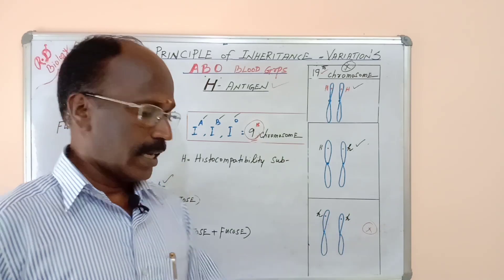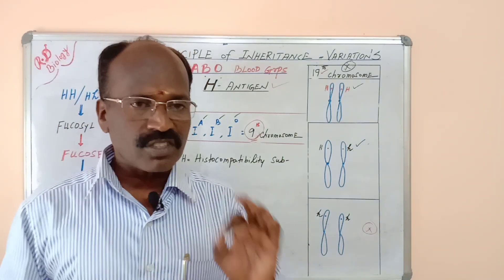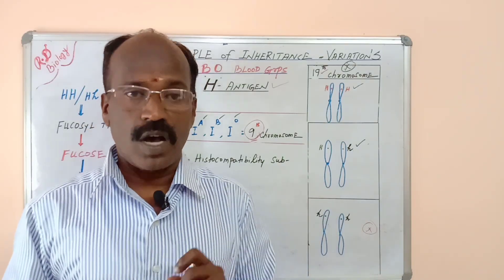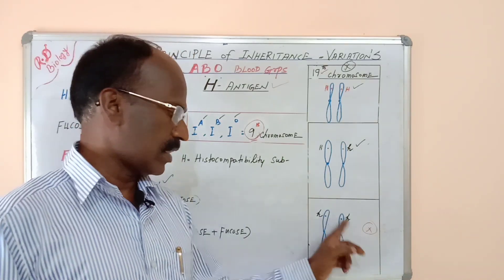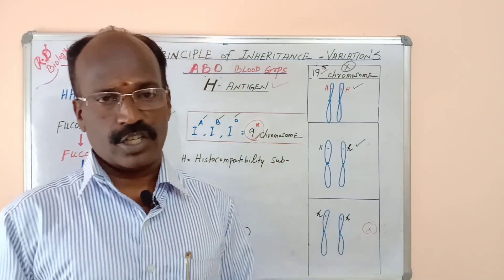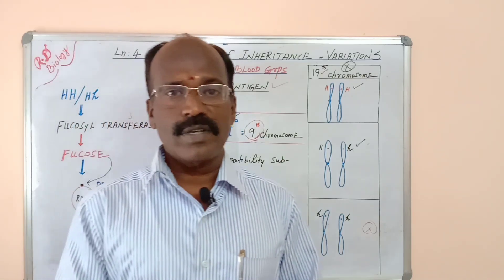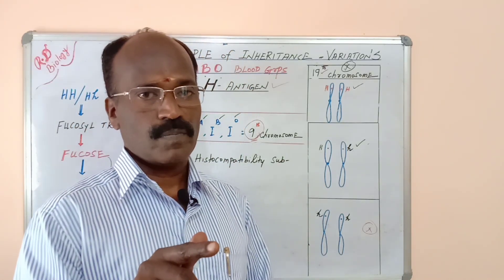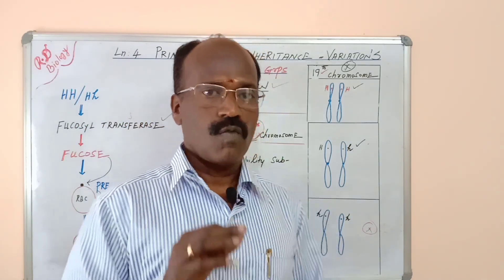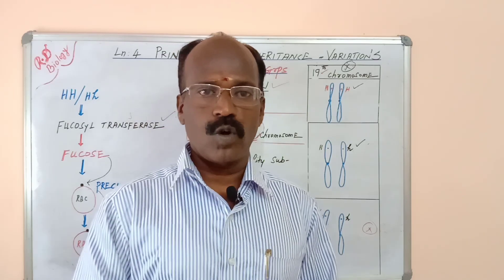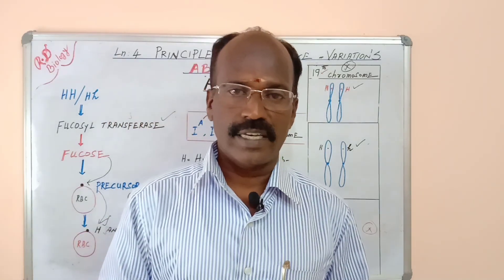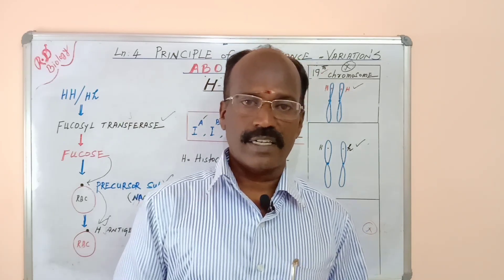If a person is homozygous recessive for the H allele on the 19th chromosome, they cannot synthesize H antigen. So their RBC does not have H antigen. If H antigen is not found in the RBC, what type of blood group will be determined? All these questions are going to be answered in the next video. Till then, thank you.